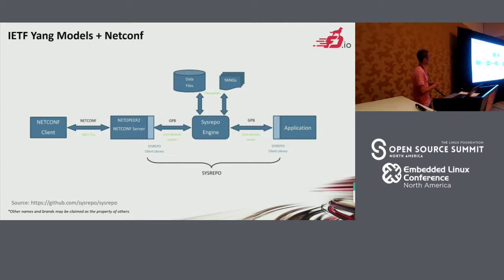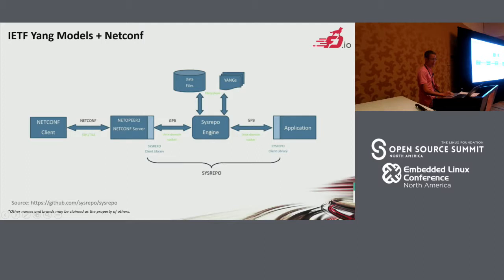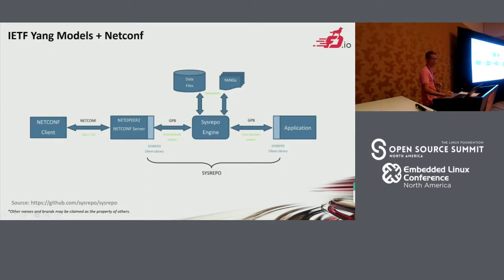This is for YANG models and netconf. The netconf client will communicate with the netconf server through the netconf northbound interface. The underlying protocol is SSH, and it can support XML or JSON format. For the netconf server, it will act as a sysrepo client. It will communicate with the sysrepo engine through the Google Protocol Buffer. All the YANG models will be stored in the data files. And besides local applications, it can also leverage the Google Protocol Buffer to communicate with the sysrepo engine.